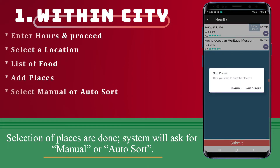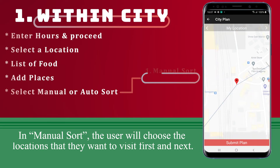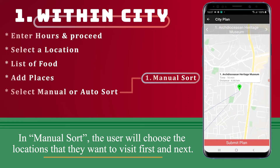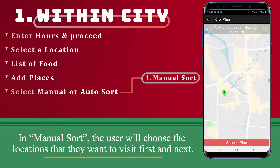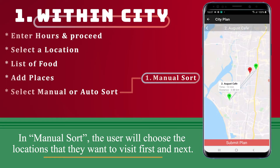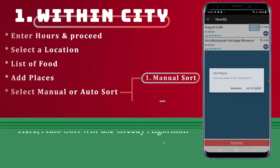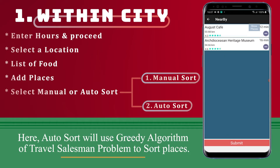The system will ask for manual or auto-sort. In manual sort, the user will choose locations that they want to visit first and next. Here, auto-sort will use a greedy algorithm of the Travelling Salesman Problem to sort places.